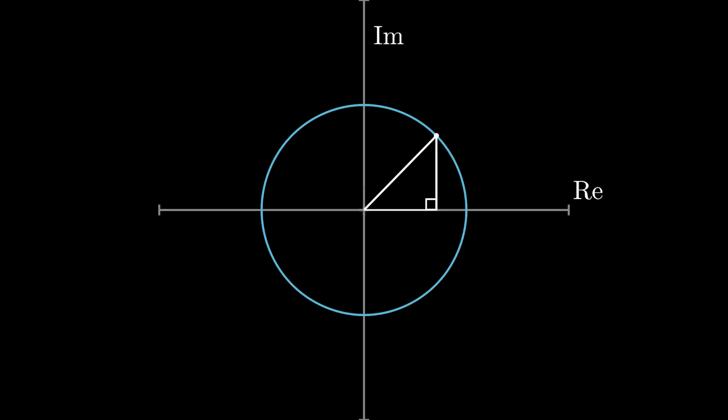Let's come back to trig functions. Since complex numbers are described in 2D space, we can represent the unit circle, right triangles, and polar coordinates all on the complex plane. The only difference is that the points on the circle are represented not by Cartesian coordinates, but by a complex number — specifically, cosine theta plus i sine theta. Thus, a point on the unit circle that is theta radians around the circle can be described with the complex number cosine theta plus i sine theta.